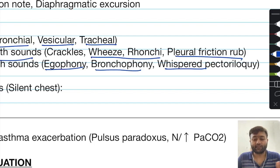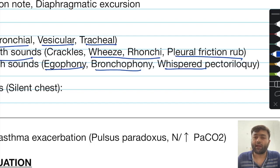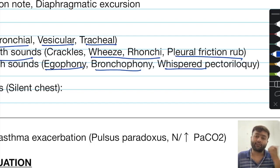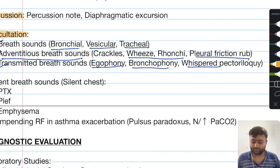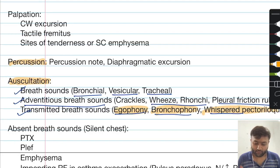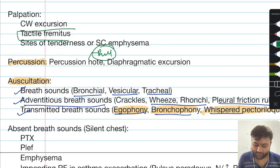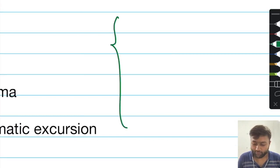Egophony is basically the conversion of an E to an A sound on auscultation. Bronchophony is the clear auscultation of sounds like '99, 99' — normally these should be heard as muffled, but if very clear, it is referred to as bronchophony. Whispered pectoriloquy is where when the patient whispers words like '1, 1, 1' or '99, 99' in a whispered tone, it is still audible at the back.